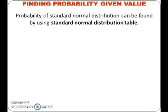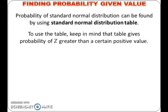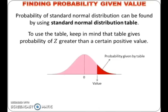Probability of standard normal distribution can be found by using the standard normal distribution table. To use the table, keep in mind that the table gives probability of z greater than a certain positive value.